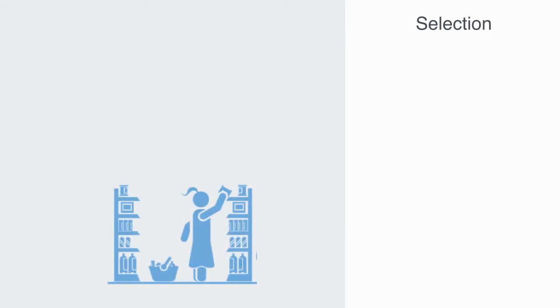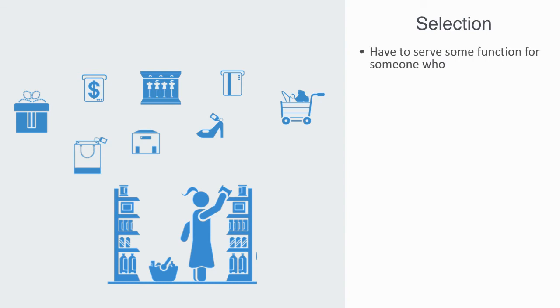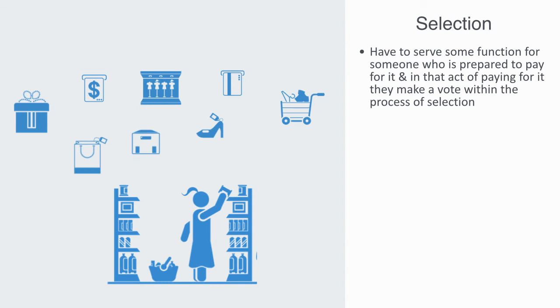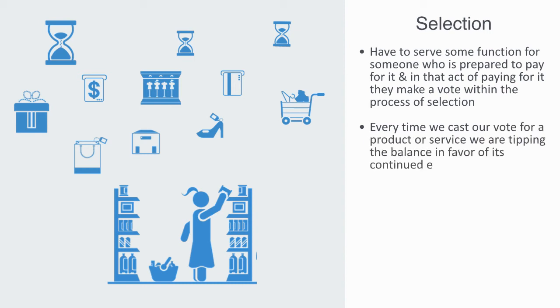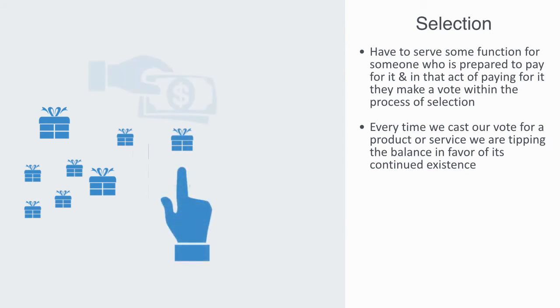Lastly, selection has to be performed on the set of elements based on their functionality. Ultimately all products, services, and economic institutions have to serve some function for someone who is prepared to pay for it. In that act of paying for it, they make a vote within the process of selection, and that process of selection really plays out on millions of different balance sheets across the economy. Every time we cast our vote for a product or service, we are tipping the balance in favor of its continuing to exist, while the balance of all the other products on the shelf that we did not select is very gradually tipping in the opposite direction.